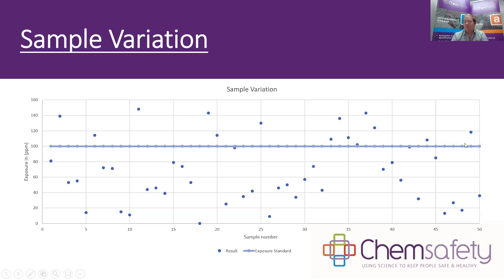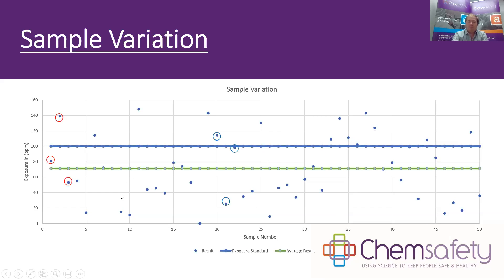Over those 50 days, 14 were above the exposure standard and therefore at potential harm, whereas a lot of the time they were below it. If we do some stats and work out the average of all these values, we get it down around 70. So the average exposure — if we did 50 measurements and some statistical analysis — would show that their true exposure is around that green line. However, 50 measurements is very impractical; it would be a large, time-consuming, and costly exercise.